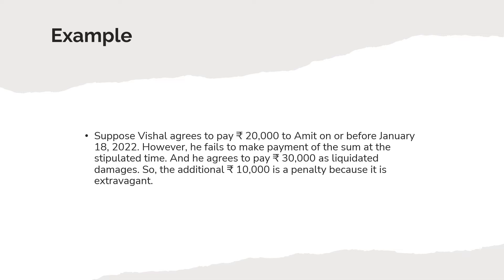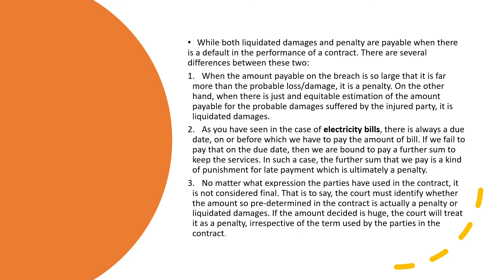Both liquidated damages and penalty are payable when there is a default in the performance of a contract, but there are several key differences. First, when the amount payable on breach is so large that it is far more than the probable loss or damage, it is a penalty. On the other hand, when there is just an equitable estimation of the amount payable for the damages suffered by an injured party, it is liquidated damages.